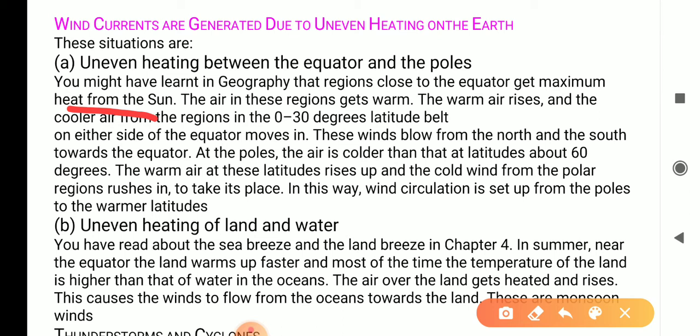At the poles, the air is cooler than that at the latitude about 60 degrees. The warm air at this latitude rises up and the cold wind from the polar region rushes in to take its place. In this way, wind circulation is set up from the poles to the warmer latitudes.